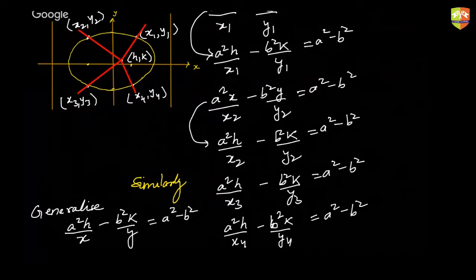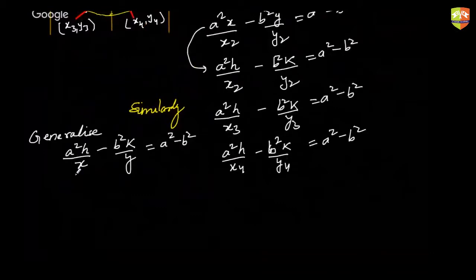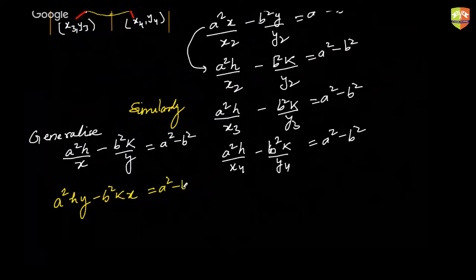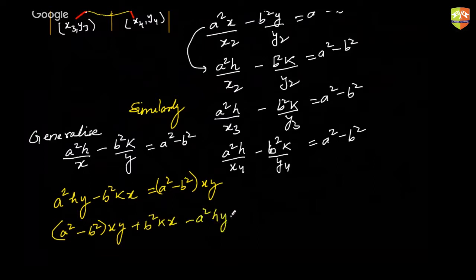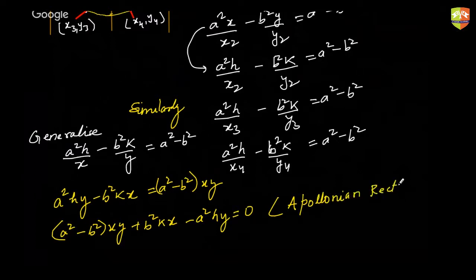I just have to replace it with x and y. That is the art of generalizing. If you simplify this, you will get a²hy − b²kx = (a² − b²)xy, which can be rewritten as (a² − b²)xy + b²kx − a²hy = 0. This is called the Apollonian rectangular hyperbola.